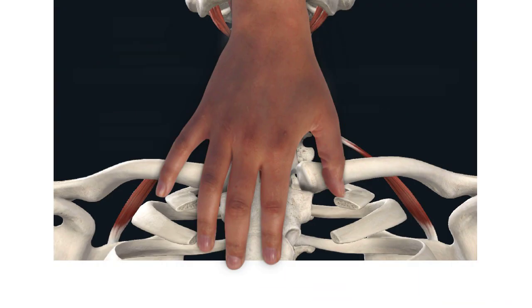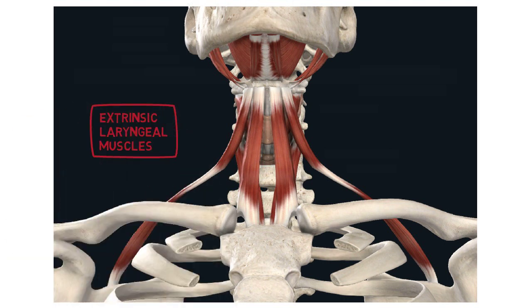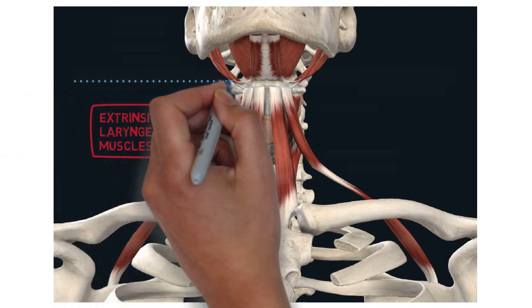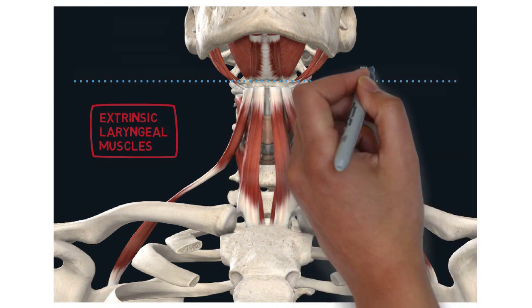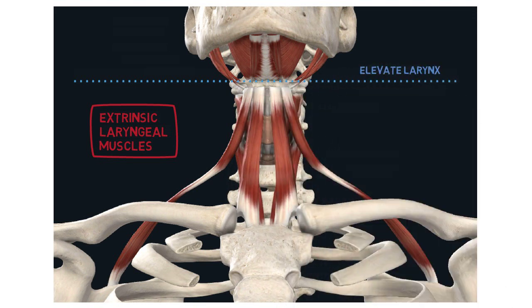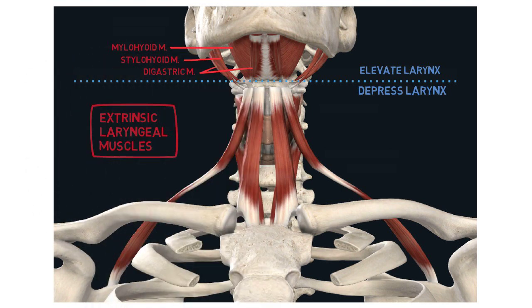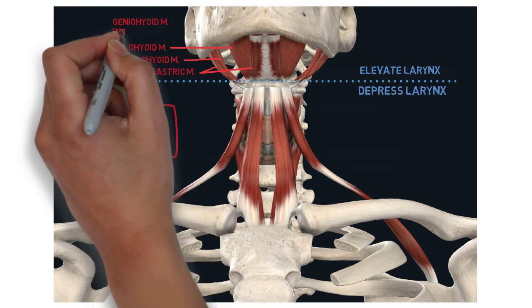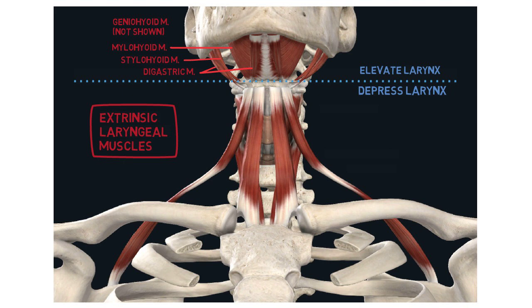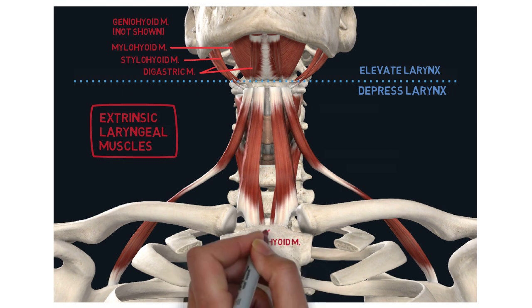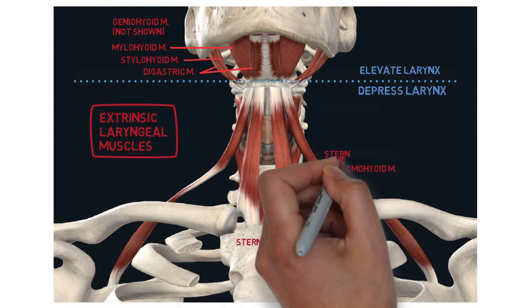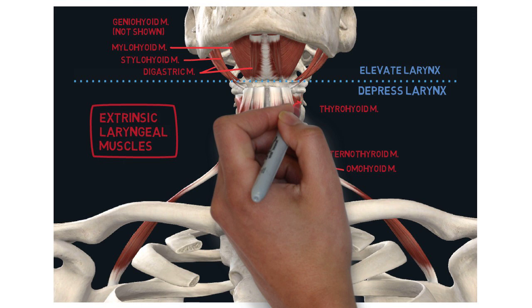The extrinsic laryngeal muscles are located on the anterior side of our body. They can also be divided into two groups: those which elevate the larynx and those which depress the larynx. The elevators are the digastric muscle, stylohyoid, mylohyoid and geniohyoid, which is located just above the mylohyoid. And the depressors are the sternohyoid, omohyoid, sternothyroid and thyrohyoid muscles.